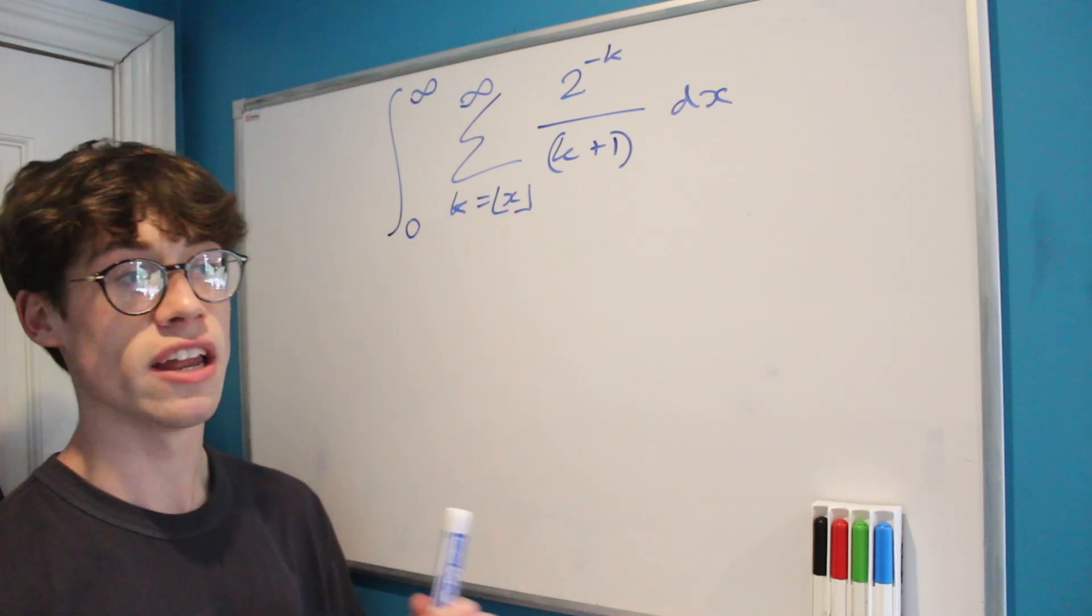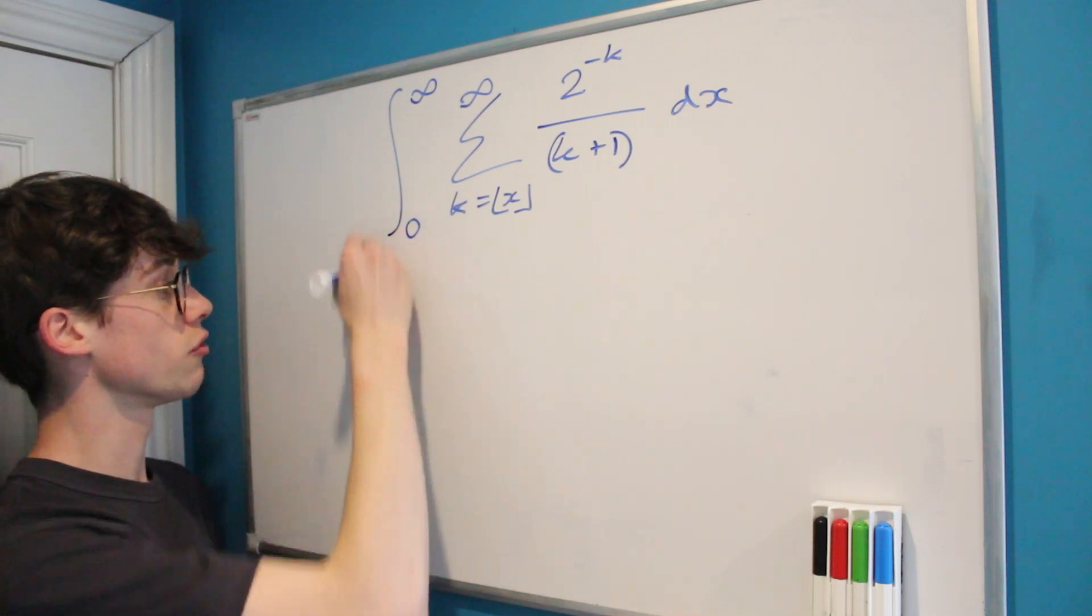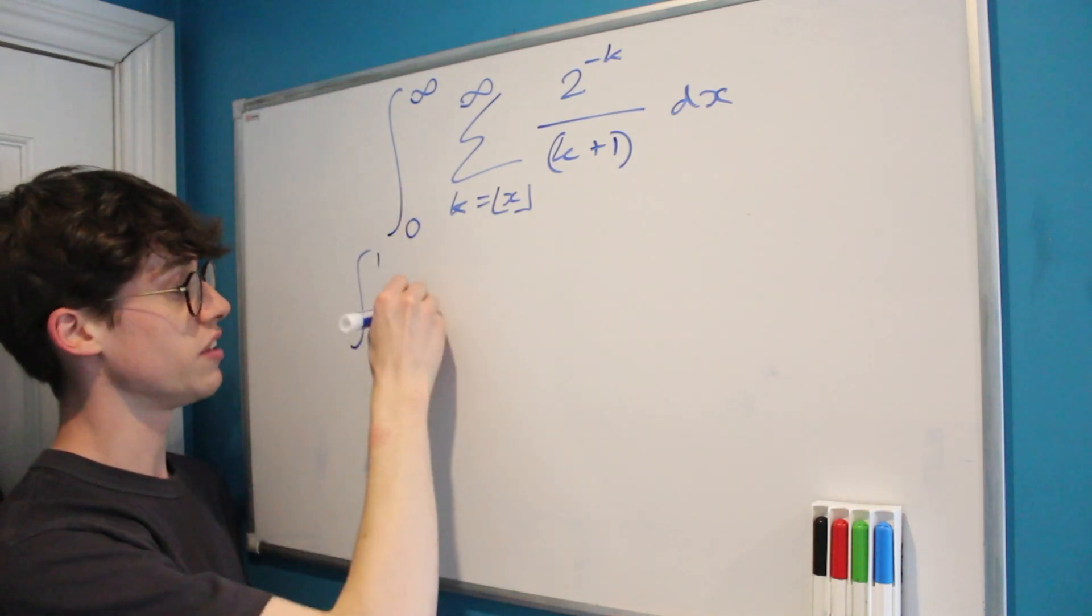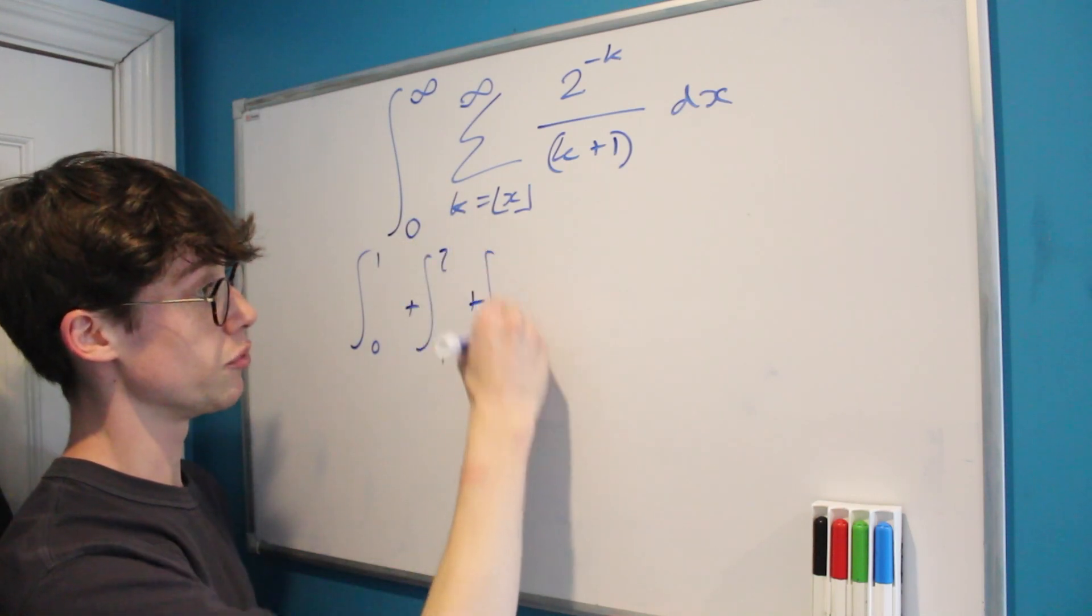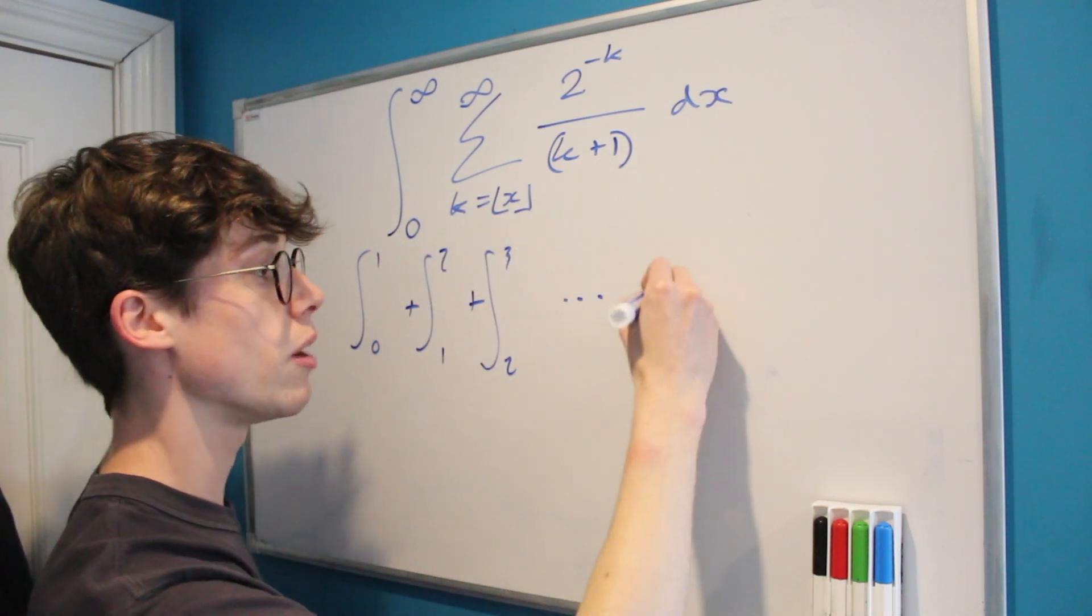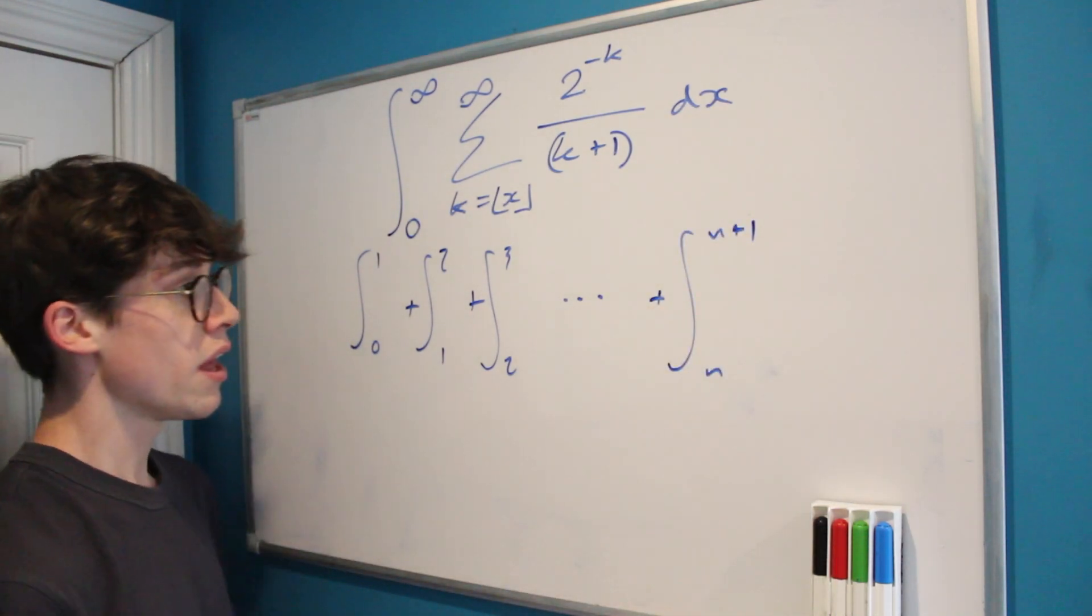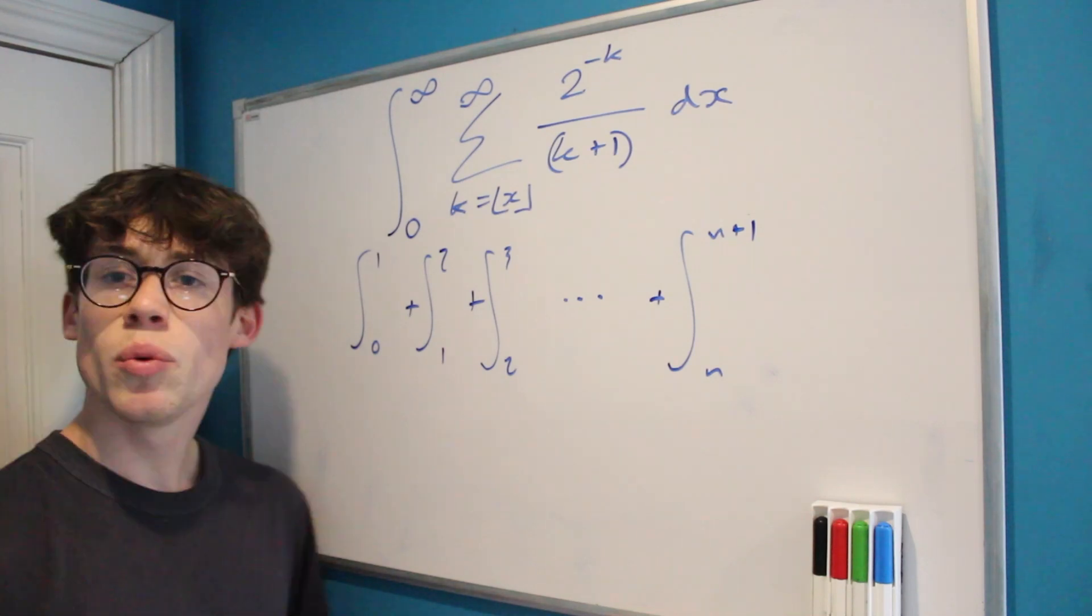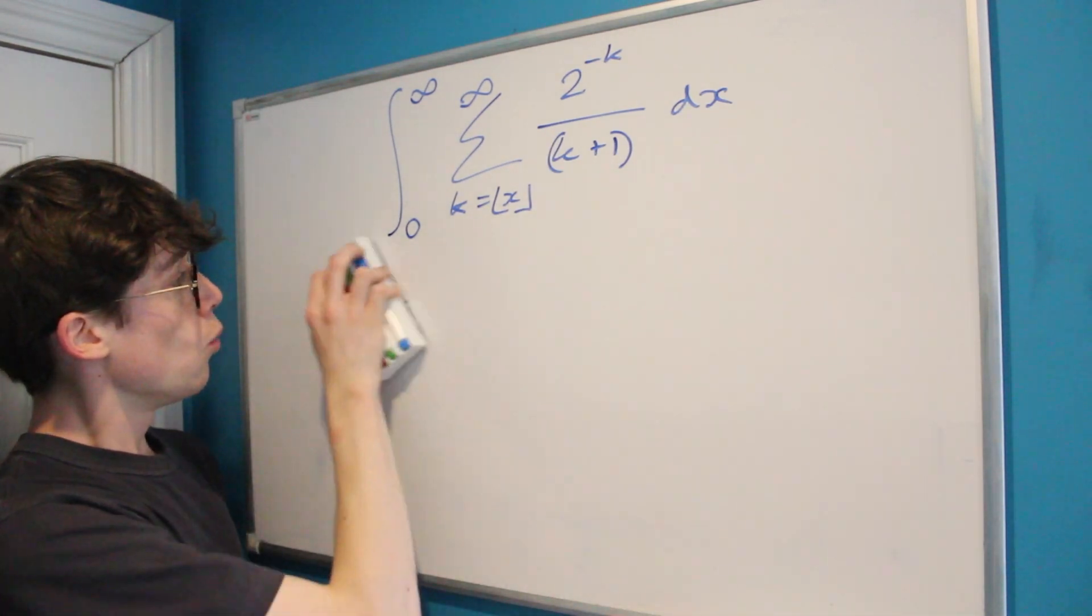It's going to involve a similar approach to what we use in lots of floor function integrals, and it's in noticing that we can split this integral from 0 to infinity up into the integral from 0 to 1 plus the integral from 1 to 2 plus the integral from 2 to 3, etc., all the way up to the integral from n to n plus 1 as n approaches infinity. And why would we want to split it up into bands of width 1?